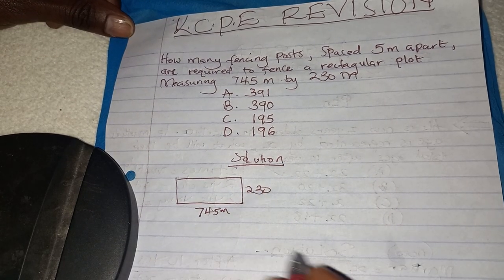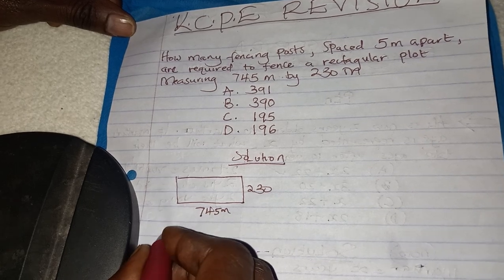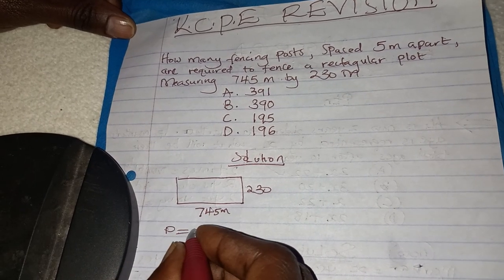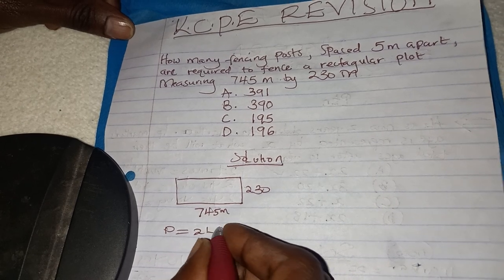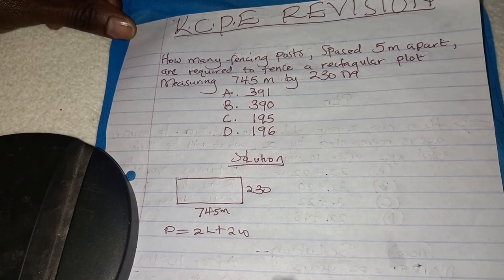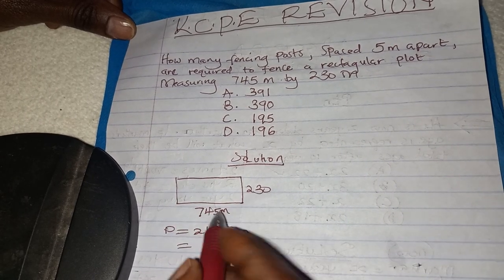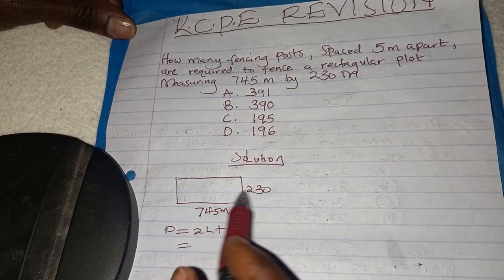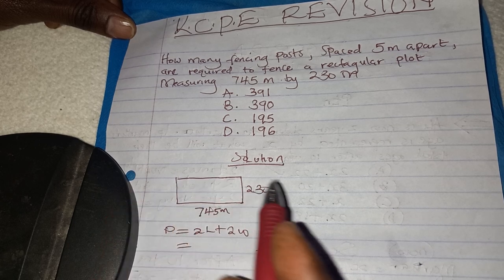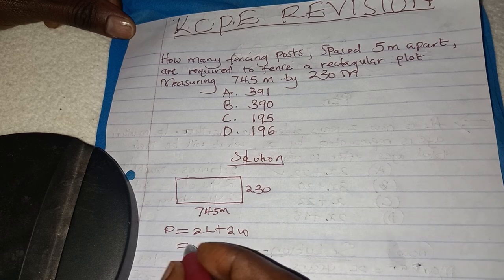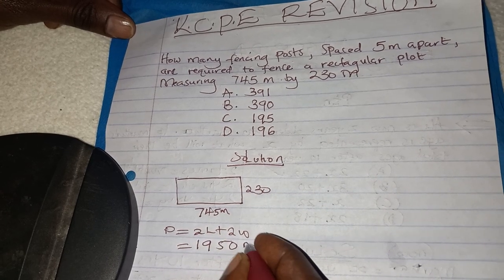You start by finding the perimeter of the rectangular plot. How do we get the perimeter? We get it by calculating 2 × length plus 2 × width. This is the same as 745 × 2 plus 230 × 2, which gives you 1950 meters.